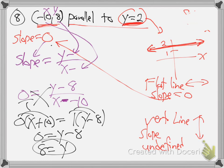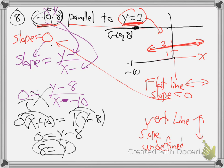Do you see why that is? Because the line goes through the point back 10, up 8. So if you go back 10, up 8, right up here — back 10, up 8 — and it's parallel to the other line, that means it goes through the height of 8. It's y equals 8.